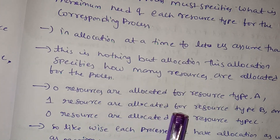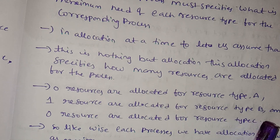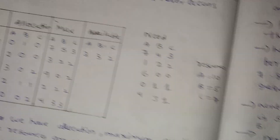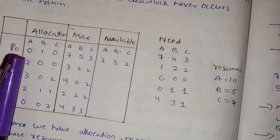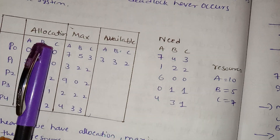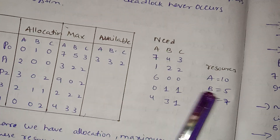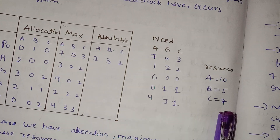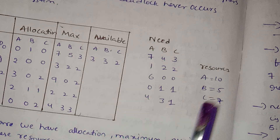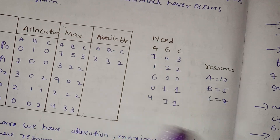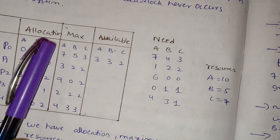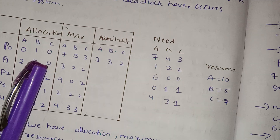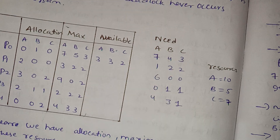For the allocation table: 1 resource is allocated for resource type B to process P0, and 0 resources are allocated for resource type C. If the maximum need for resource B is 5, then currently 1 resource is allocated to P0. Resource C has 7 RAMs total, and P0 is allocated 0.